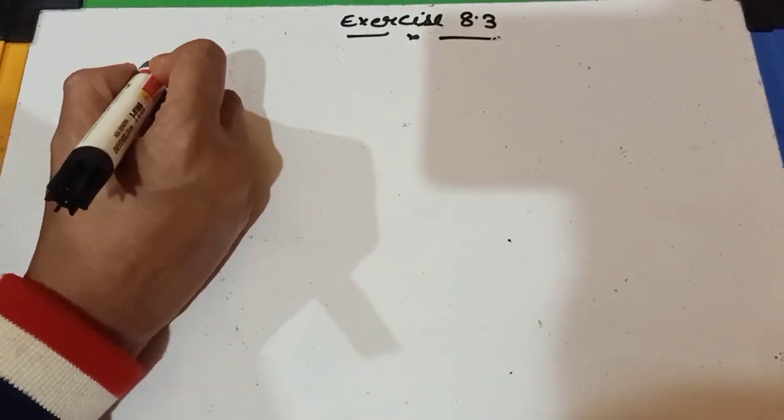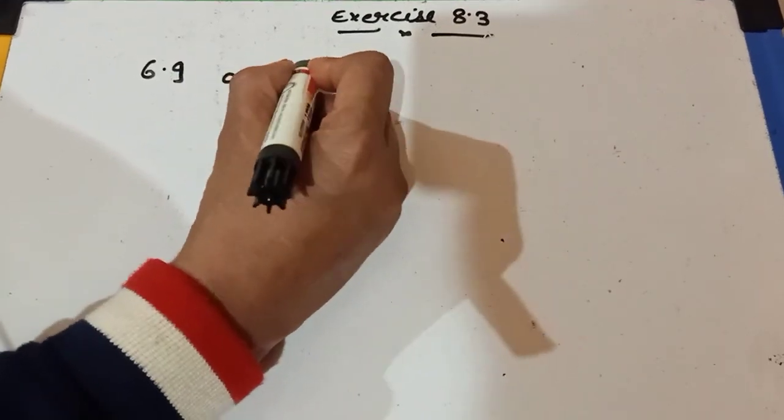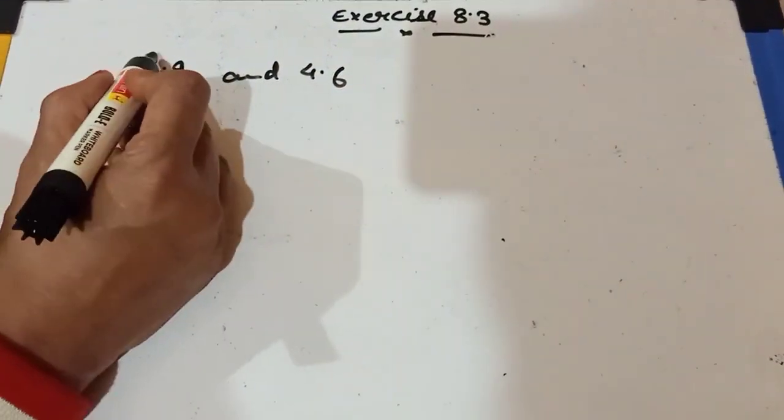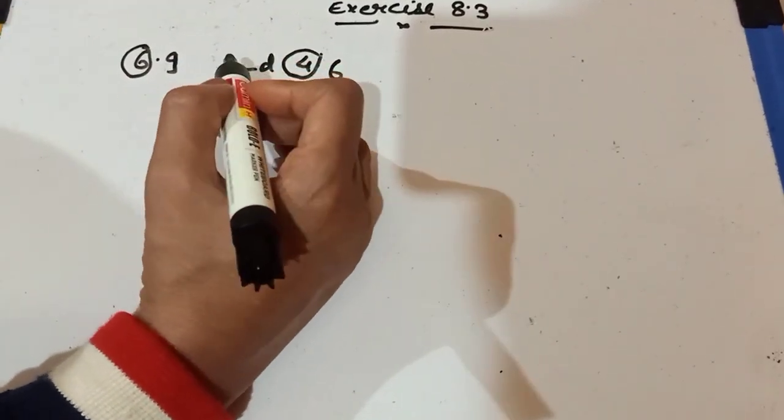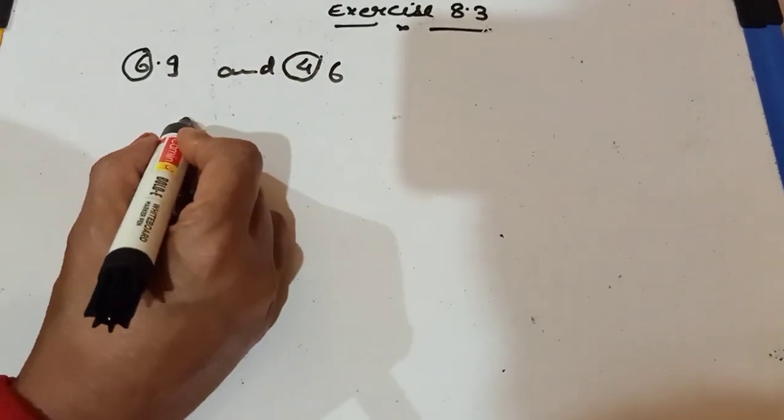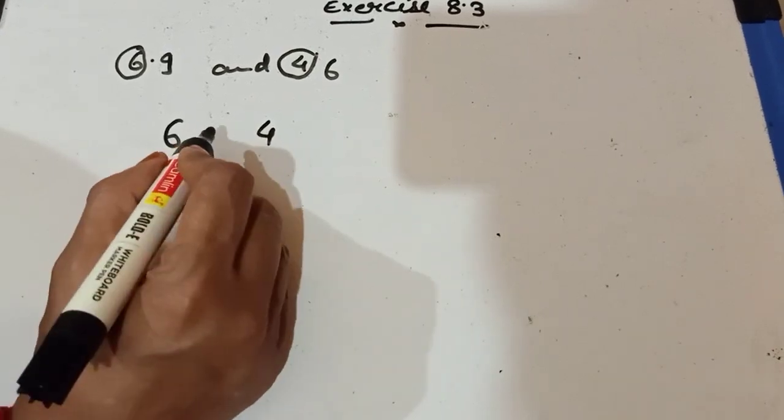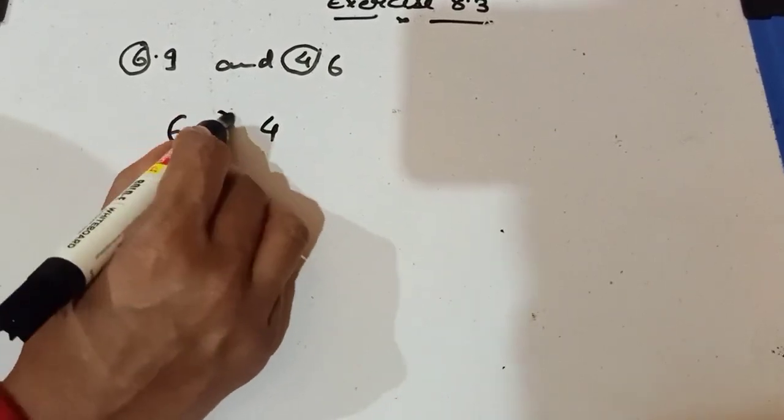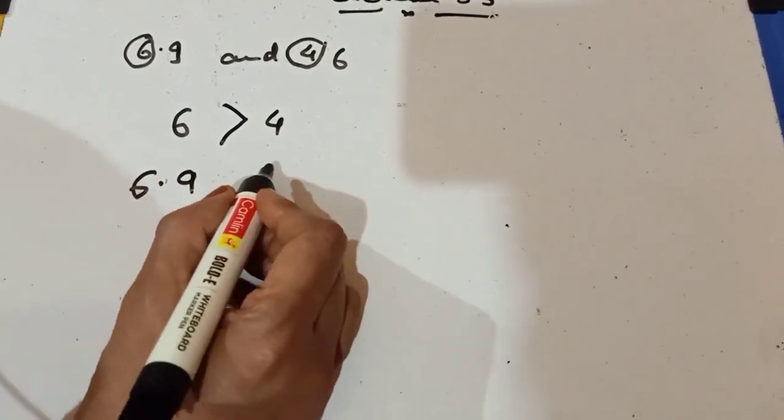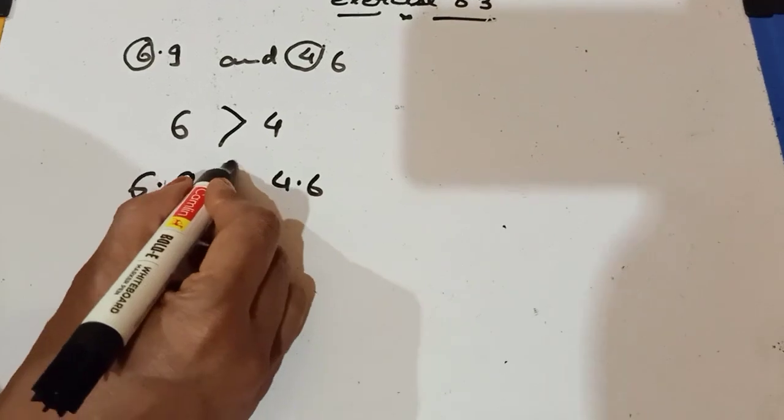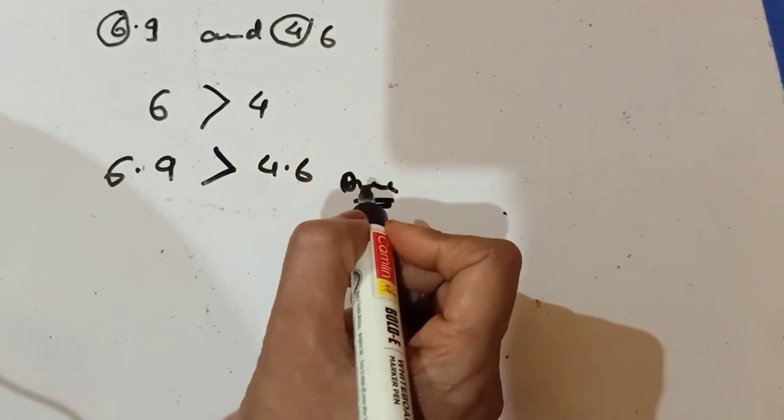So suppose I am taking a number 6.9 and 4.6. Children, first we take these two numbers, the left side number. So it is whole number 6 and 4. Children, look carefully which one is greater? 6 is greater. So simply we can do 6.9 and 4.6. Which one is greater? 6.9 is greater and it is the answer of this question.